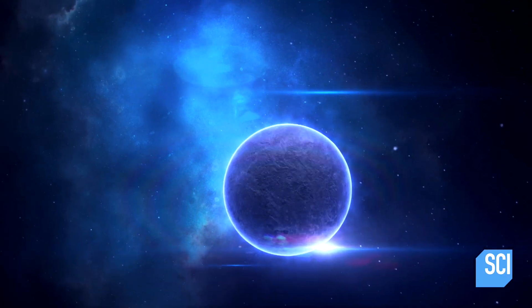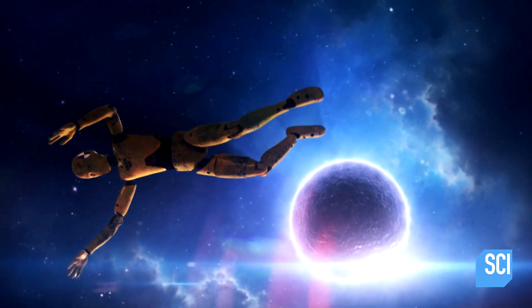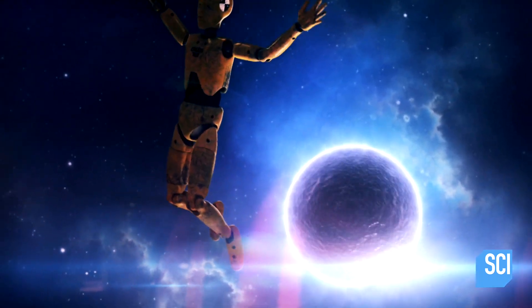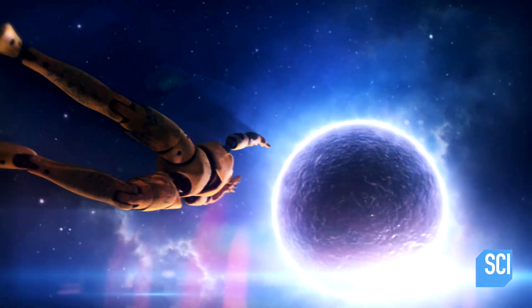The neutron star's gravity is 200 billion times stronger than on Earth. Around 150 miles above the surface, it starts to pull on Chuck's limbs in a distinctly unpleasant way.